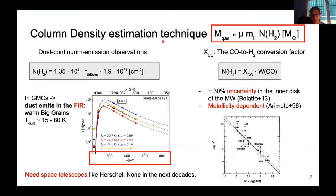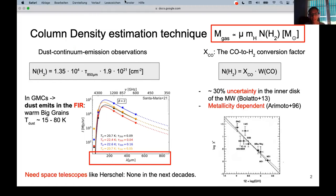What are the usual techniques to estimate the column density? One is from dust continuum emission observations. For this we have to keep in mind that the dust in the molecular clouds emits in the far infrared.